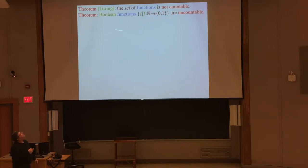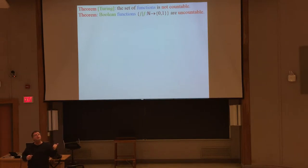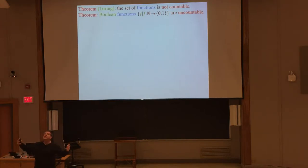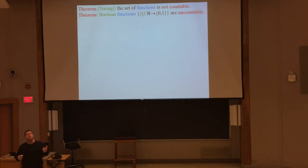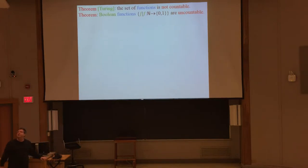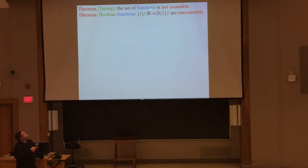We'll show that there are more boolean functions than integers, and therefore more boolean functions than pieces of code and algorithms, and therefore some functions cannot be computed using any algorithm. Boolean functions take zeros and ones as input and produce a single bit as output. The number of actual functions of other types — cosine, sine, tangent, square root, exponentiation — is even larger than boolean functions. So we'll show this result just for boolean functions, and it's already uncountable.